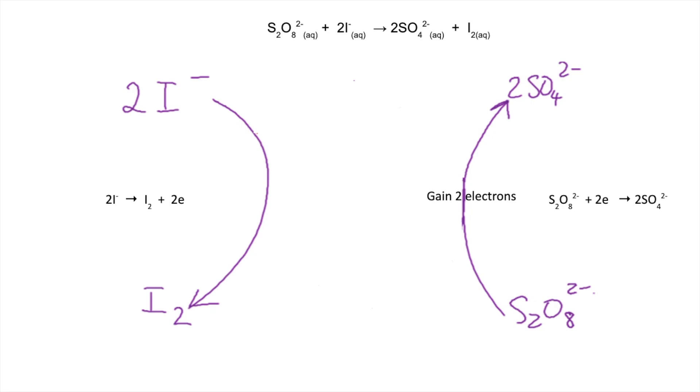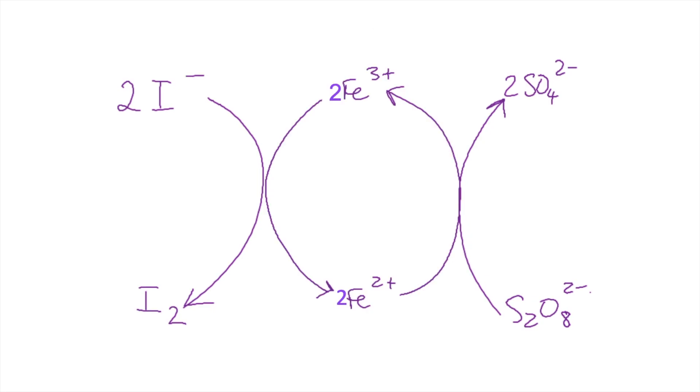So remember what we said about iron 2 plus and iron 3 plus. They can gain electrons and lose electrons. So if we bring that into the middle of the diagram, you can see I've got 2 moles of Fe3+ and 2 moles of Fe2+. Because 2 electrons are involved remember. What's going to happen is the iodide ions are going to get rid of their electrons. And the iron 3 plus ions are going to gain them and turn into Fe2+. That's going to then lose the 2 electrons and essentially give them to the S2O82- ions.